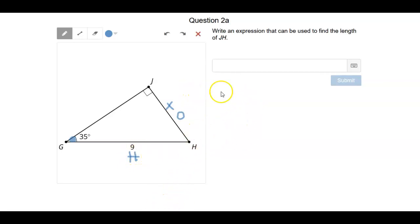The trig function that uses opposite and hypotenuse is sine. So if we do sine of 35 degrees, that would be equal to x over, and our hypotenuse is 9. So this would be the expression we can use to find the length of JH.